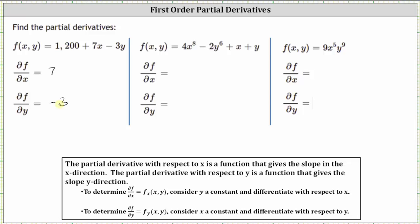Next, we have f(x, y) = 4x⁸ - 2y⁶ + x + y. We begin by determining the partial of f with respect to x, so we treat y as a constant and differentiate with respect to x. The derivative of 4x⁸ with respect to x is four times 8x⁷. The derivative of 2y⁶ with respect to x is zero, because we treat y as a constant. Plus the derivative of x with respect to x is one, and the derivative of y with respect to x is zero because we are treating y as a constant. Therefore the partial of f with respect to x is equal to 32x⁷ + 1.